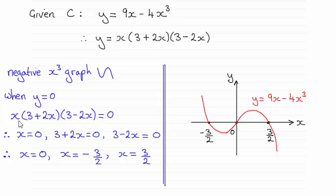then clearly each of these factors would be 0. So x could be 0, or 3 plus 2x equals 0, or 3 minus 2x equals 0. And that leads us to x equaling 0, minus 3 over 2, and 3 over 2.